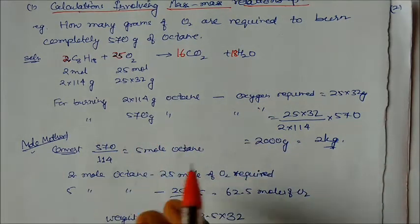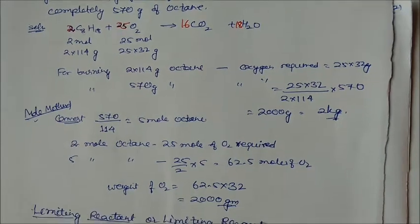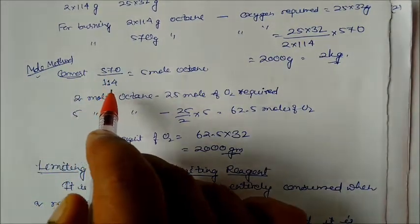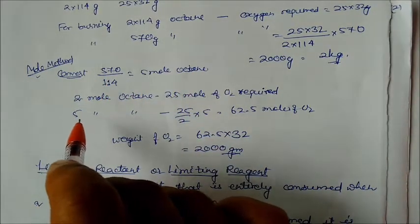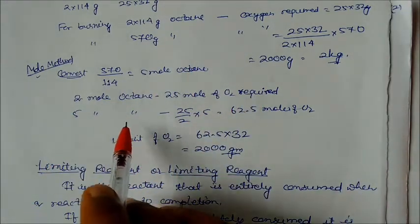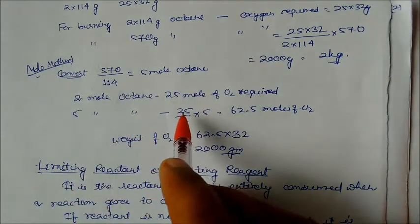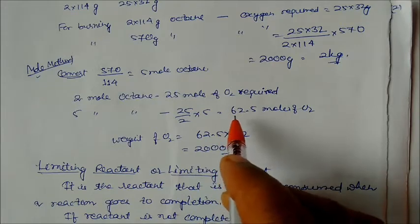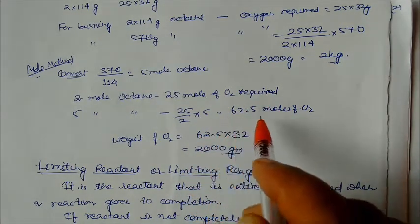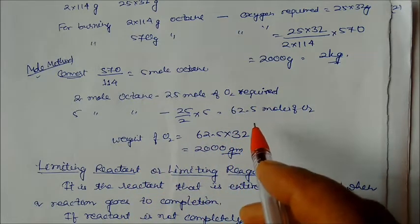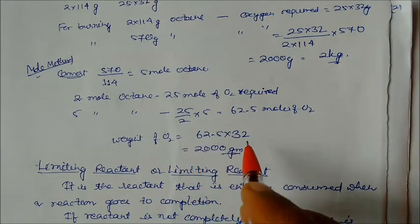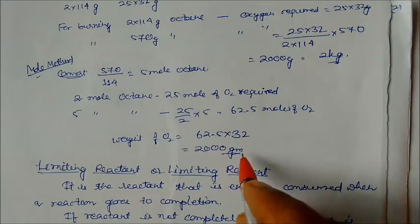You can also solve using moles. Convert the weight of octane to moles: 570 / 114 = 5 moles of octane. For 2 moles of octane, we require 25 moles of oxygen. For 5 moles of octane, we need (25/2) × 5 = 62.5 moles of oxygen. Multiplying by the molar mass of oxygen gives 2000 grams — the same answer.